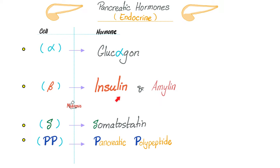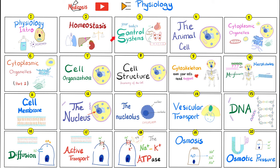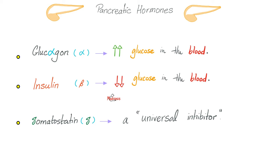The beta cell also secretes insulin and amylin. And there are other cells known as PP cells, which secrete pancreatic polypeptide. To learn more about somatostatin, check out my physiology playlist — I have a video titled 'Somatostatin.'